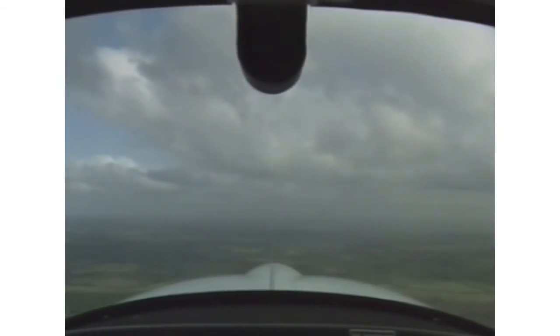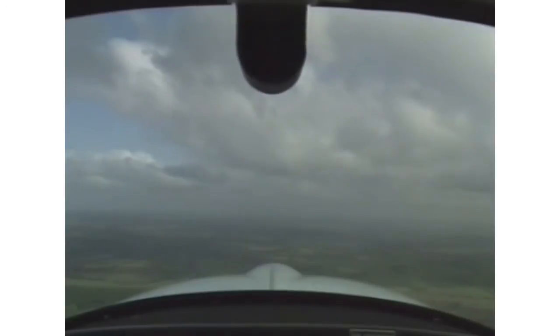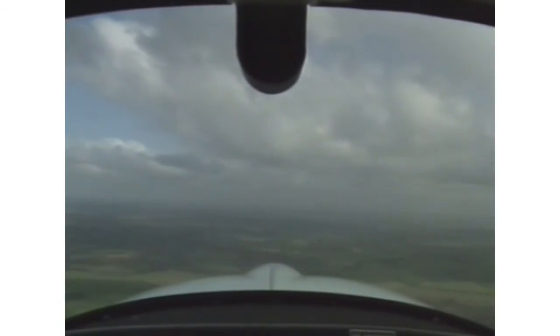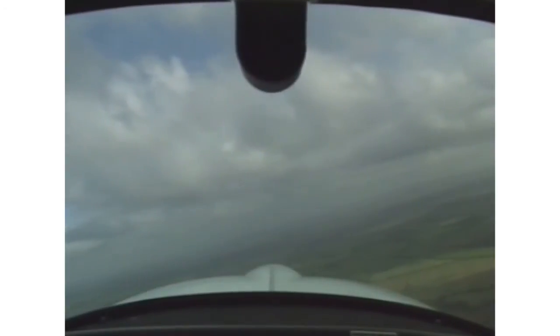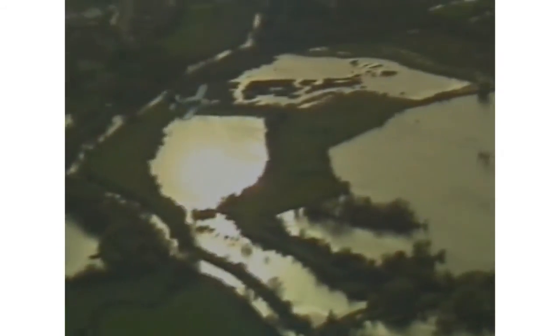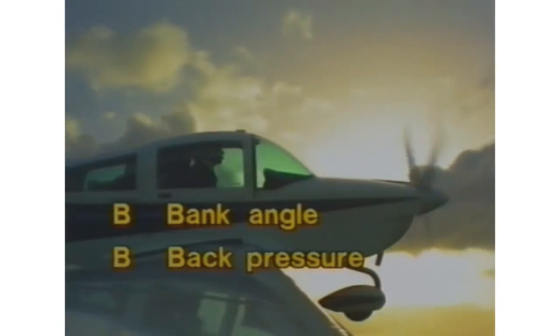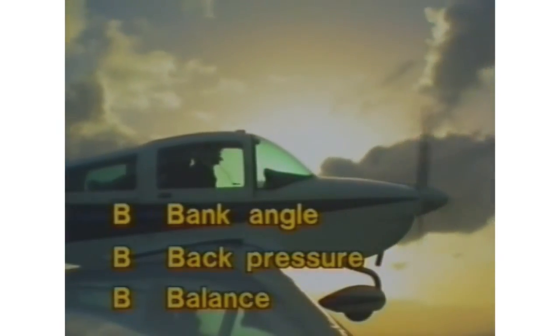Medium level turns — our aim is to turn the aircraft in level flight onto selected headings using 30 degrees of bank. Lookout completed, rotate the control column in the direction you wish to turn to select a bank angle of 30 degrees. As you approach the 30 degree bank angle, apply gentle back pressure selecting a slightly higher nose attitude, and there we are established in the turn. Three B's to check: bank angle, back pressure, and balance — confirming the aircraft remains in balance with a small amount of rudder in the direction of turn.